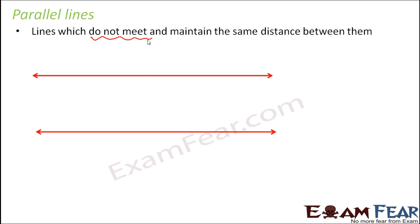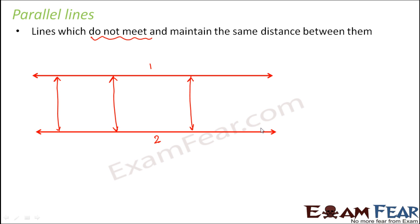Look at this example. You have two lines — line number one and line number two. When the distance between line one and line two remains the same throughout, it doesn't matter how far these two lines go, they are never going to meet each other because the distance between them will always remain the same. So parallel lines never meet and never appear to meet.